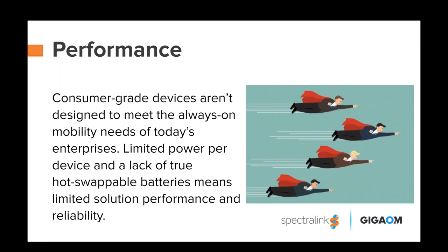That's a great point on battery performance — especially in retail where different people use the same device across shifts. With an iPhone you can't switch out the battery at all unless you send it in. Some Android devices have swappable batteries, but they're not hot-swappable. Andrew, can you talk about the importance of that in these environments?